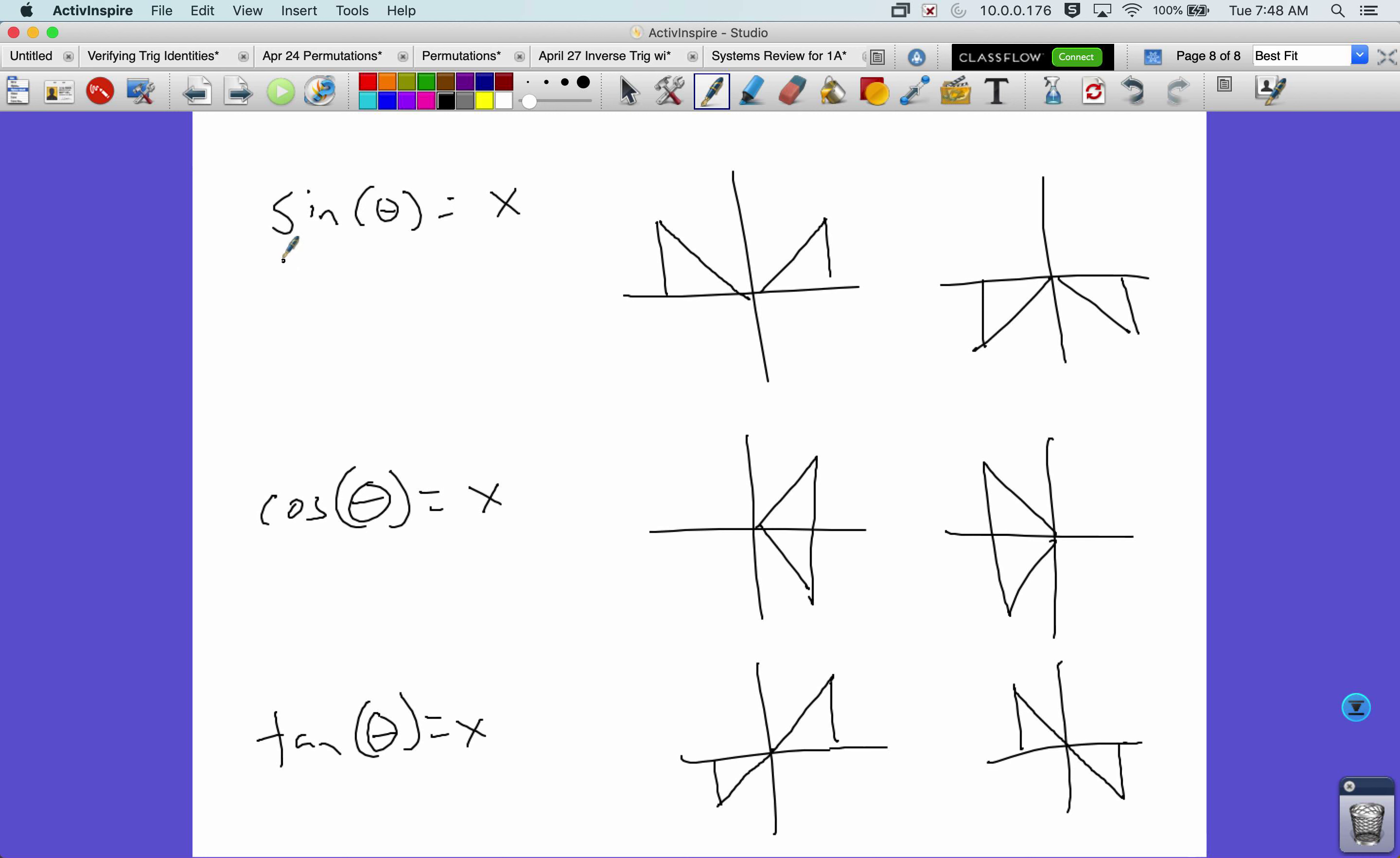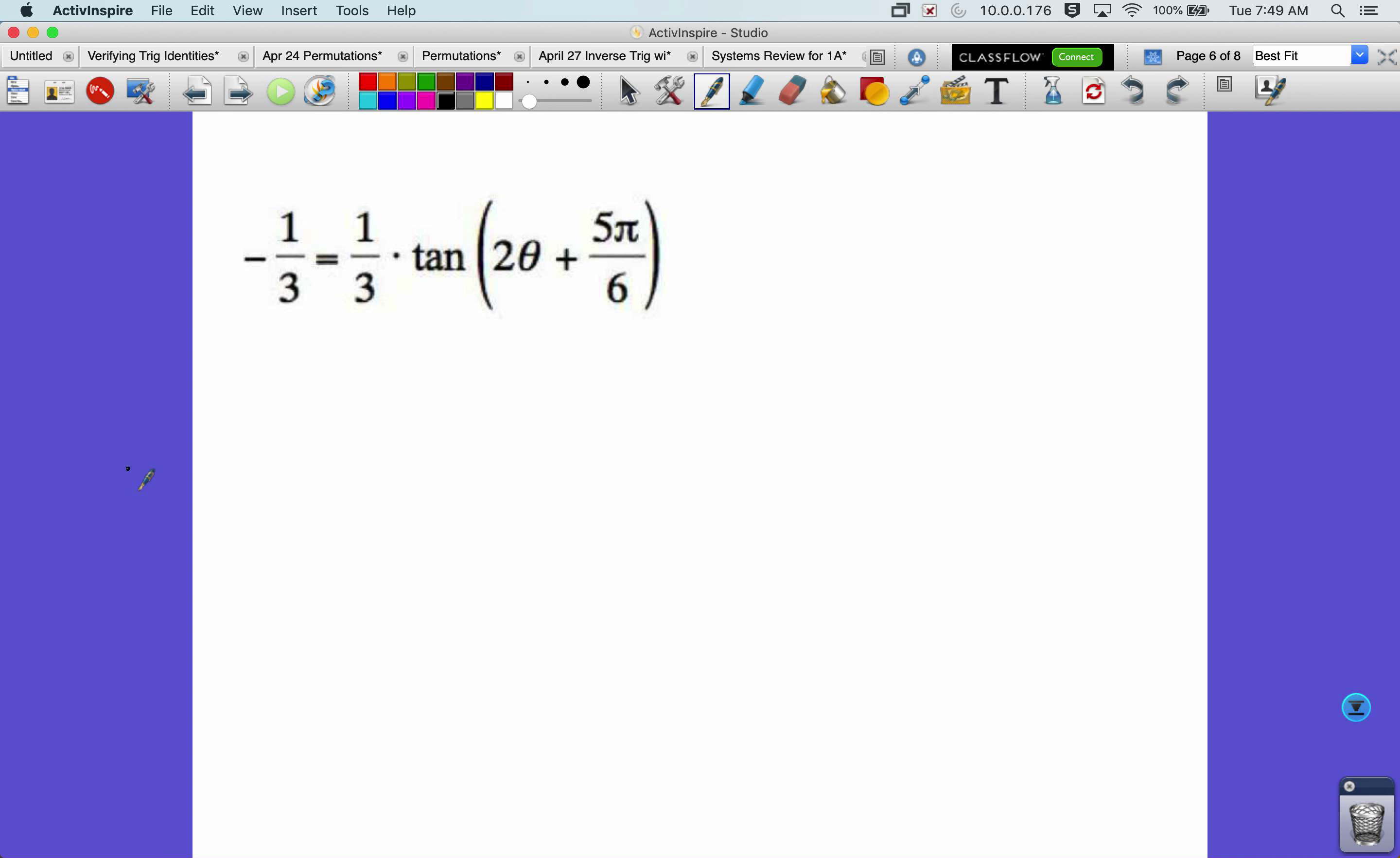Yeah, I think maybe having this in your notes might help you with some of the inverse trig problems. Let's go back to this one here. We have our final problem. Negative one-third equals one-third tangent of two theta plus five pi over six.